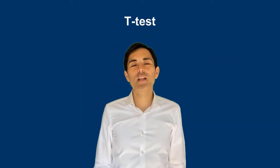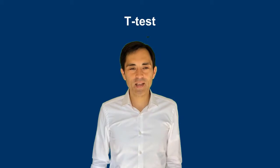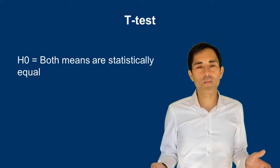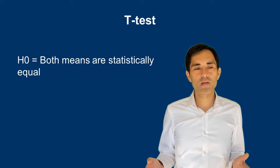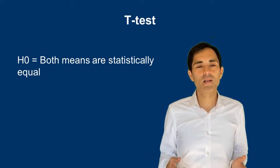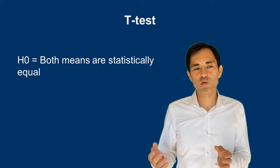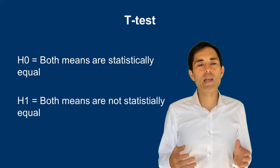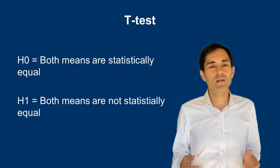The formal definition of a t-test can be as follows: the t-test is a method that determines whether two populations or groups are statistically different from each other. We would have a baseline hypothesis H0, where both means are statistically equal so there is no difference between groups, or H1, where both means are not statistically equal.